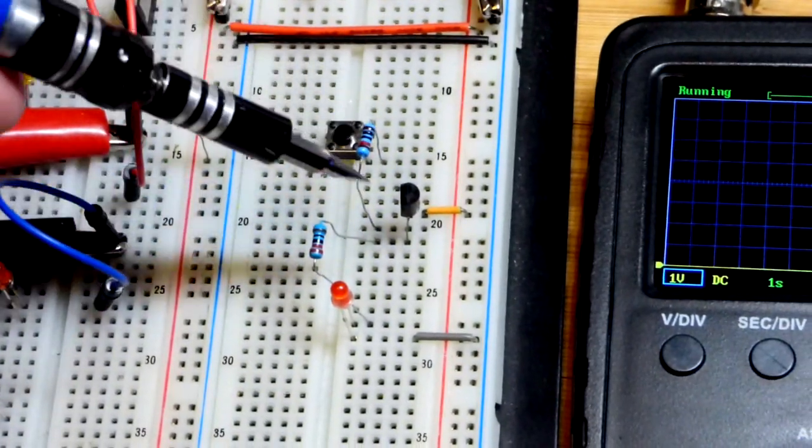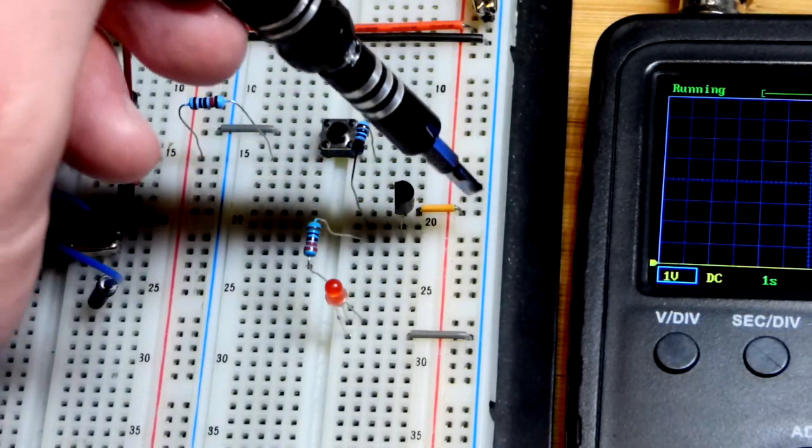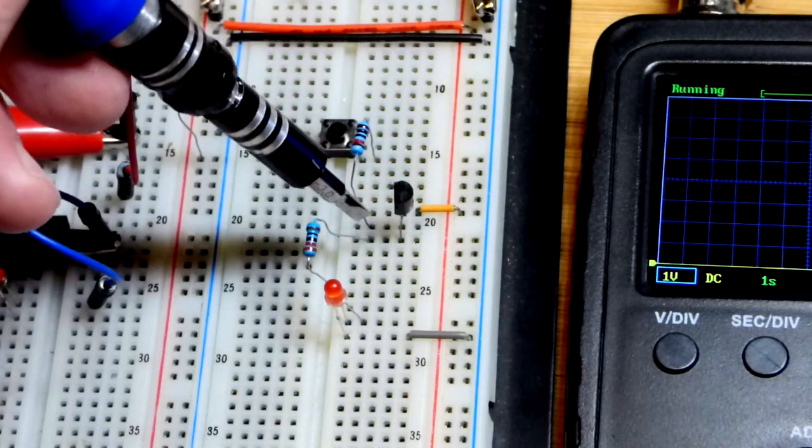But when I was building this circuit, instead of the resistor here I put a jumper. So when I press the button I had a direct connection from the positive supply. There is a diode drop through the transistor, but it went directly to ground other than that diode drop.